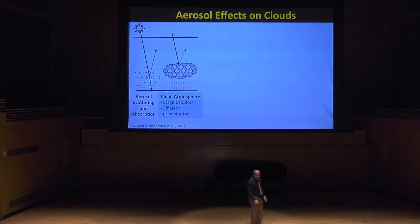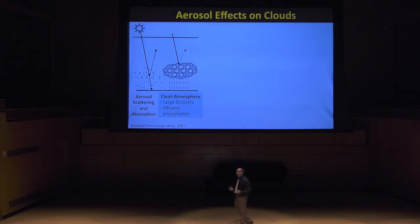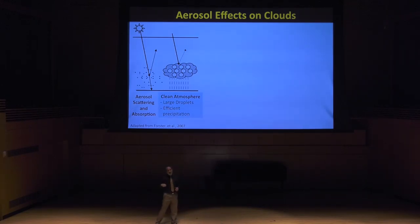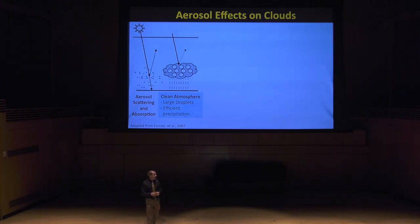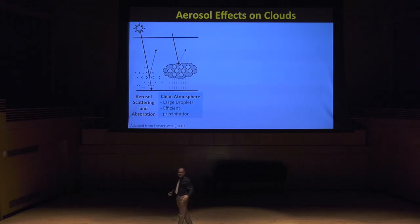Those particles directly affect clouds on Earth. There would be no clouds on Earth if it weren't for particles in suspension in the atmosphere. Every single droplet in the clouds is formed around a particle — not just pollution, but also natural particles like biogenic particles emitted by forests. Water vapor condenses around those particles, grows into cloud droplets, and forms the clouds that we know.